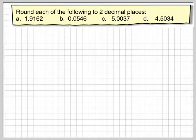Hi, in this video we're going to round numbers off to two decimal places. We've got 1.9162, 0.0546, 5.0037, and 4.5034.